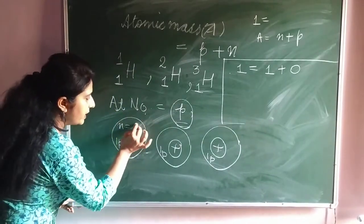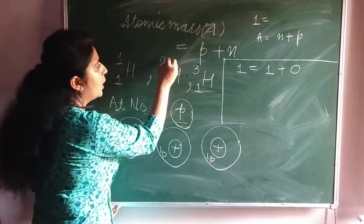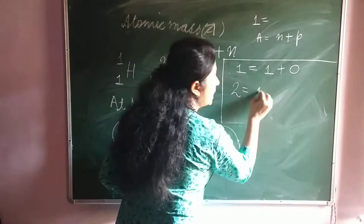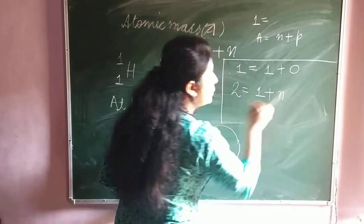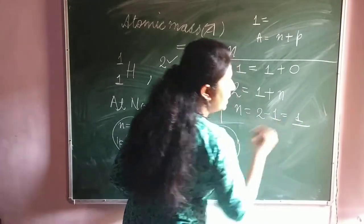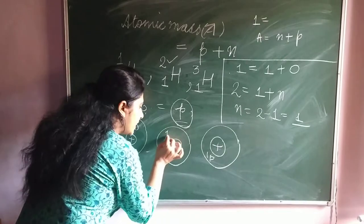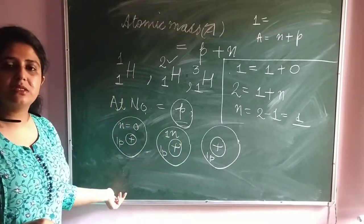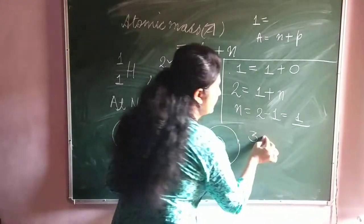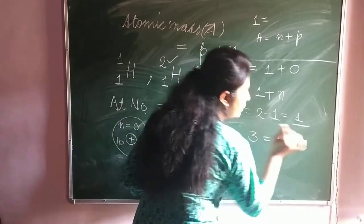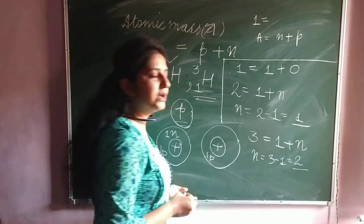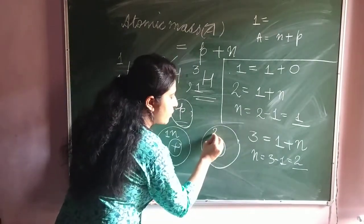In the first case, neutron number is 0. In the second case, when atomic mass is 2 and atomic number is 1, number of protons is 1. Number of neutrons equals 2 minus 1, which equals 1. So there is 1 neutron present. Moving to the third case: atomic mass is 3, number of protons equals 1, so number of neutrons equals 3 minus 1, which is 2. Number of neutrons is 2.